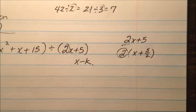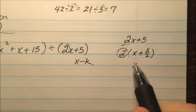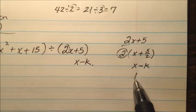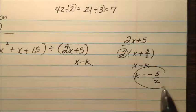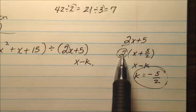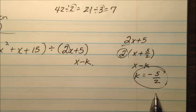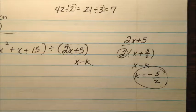Well, if I ignore this 2 for a second, this is in the form x minus k, where my k value is negative 5 halves. So let's go ahead and do that, just ignore that 2, and let's use my synthetic division and divide by negative 5 halves.